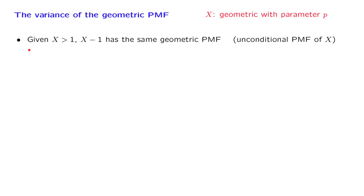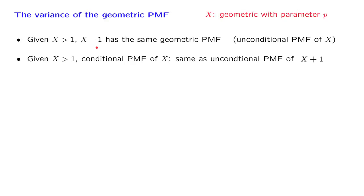Now let us take this observation and add 1 to the random variables involved, turning this statement to the following version: the conditional PMF of x plus 1 is the same as the unconditional PMF of x plus 1. So it's the same statement as before, except that we added 1.